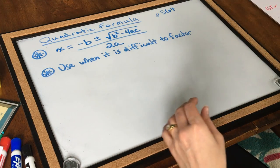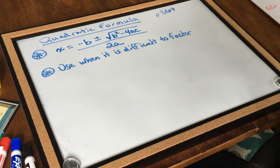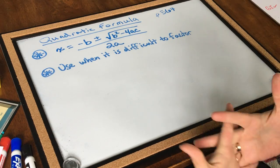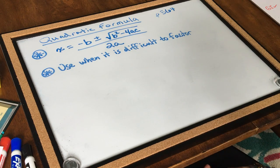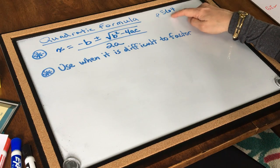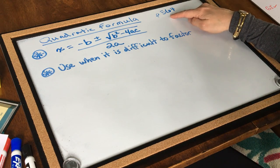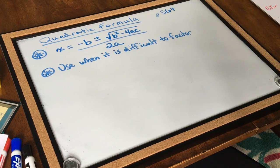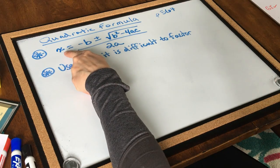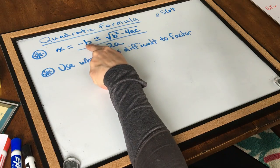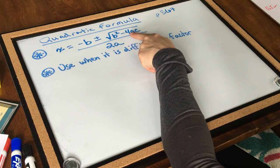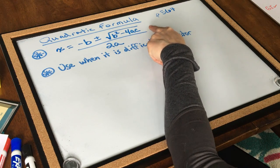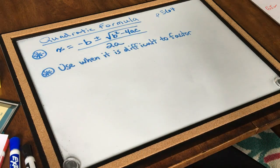All right, let's do the quadratic formula. The quadratic formula is exactly what it sounds like — it is a formula, and it's really important that you have this formula in your notes and know how to use it. You can find it in your books on page 567. The quadratic formula is: x equals negative b plus or minus the square root of b squared minus 4ac, all divided by 2a.